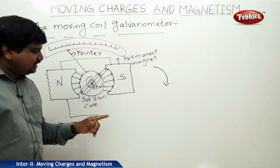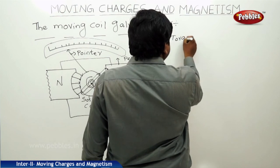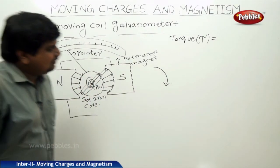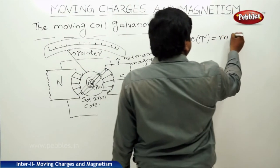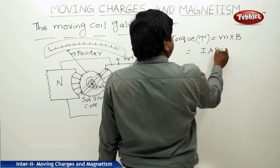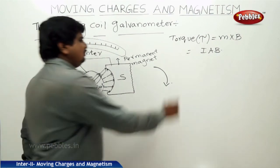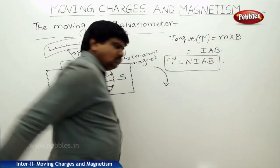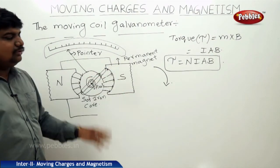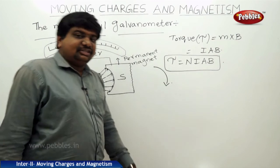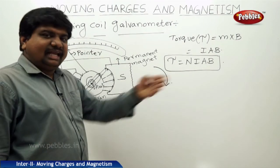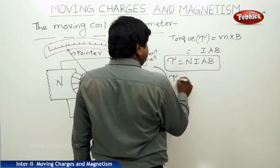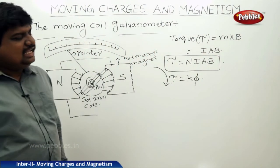These two forces constitute a torque. The torque due to the magnetic field is equal to M cross B, which equals N·I·A·B since there are n number of turns. This magnetic torque is mechanically balanced by the restoring torque K·φ, similar to restoring force F equals K·x. Equating, N·I·A·B equals K·φ.